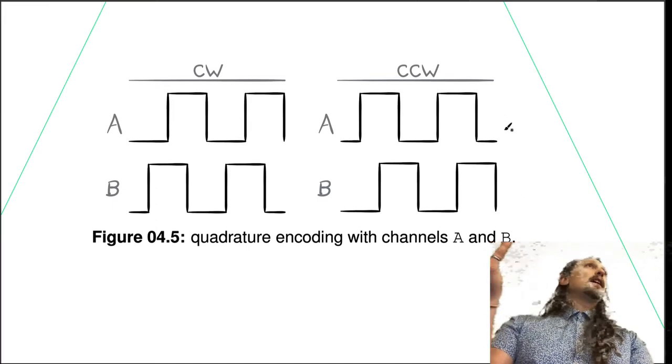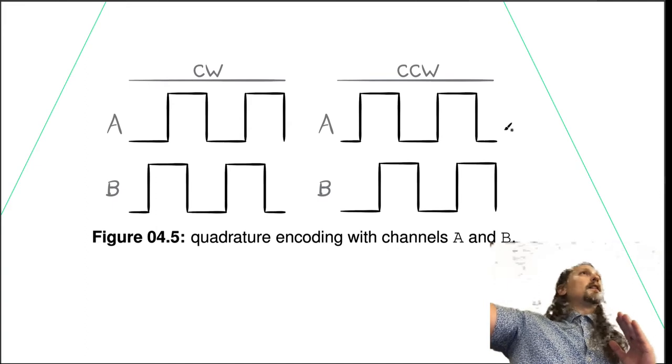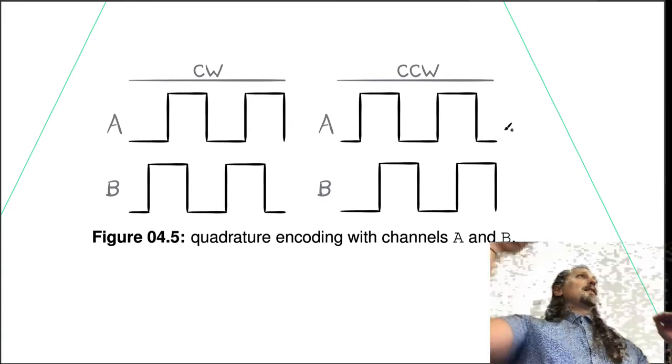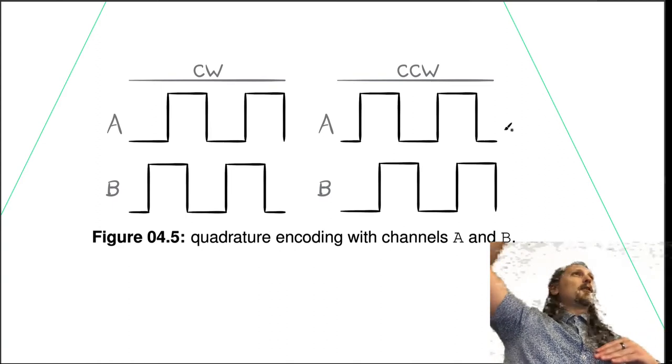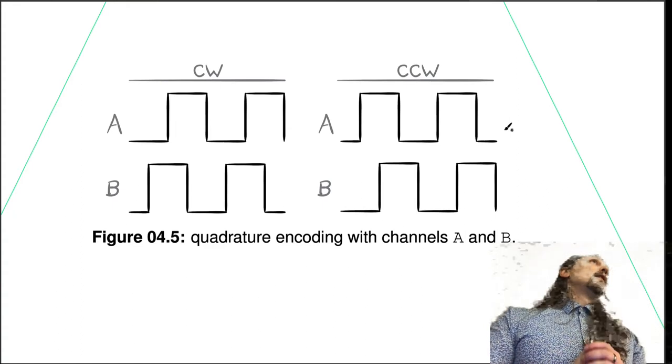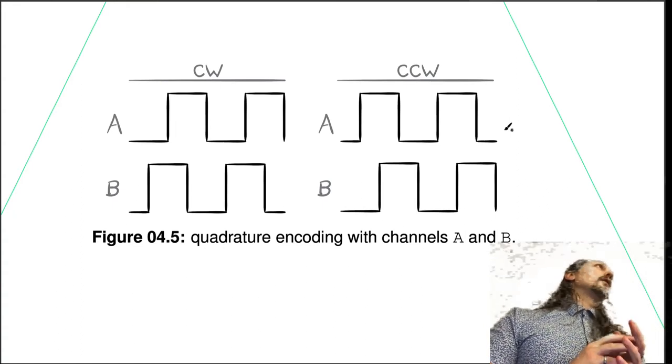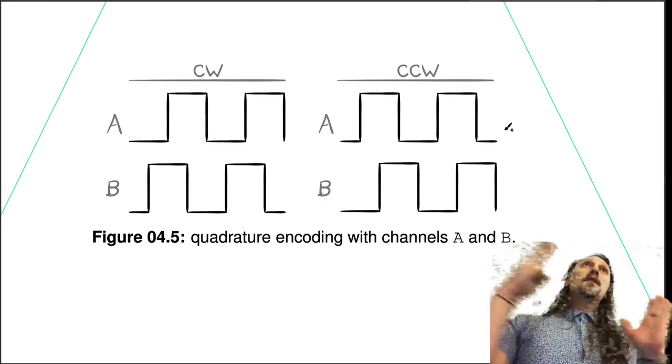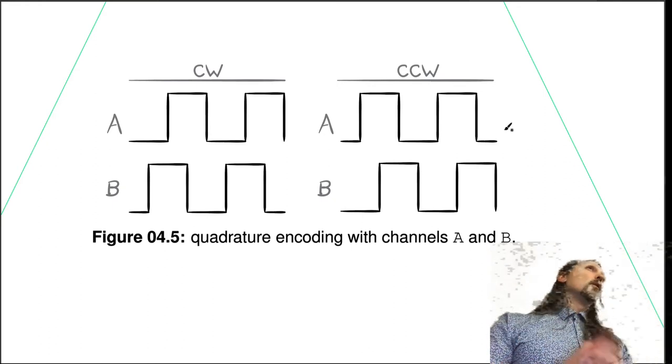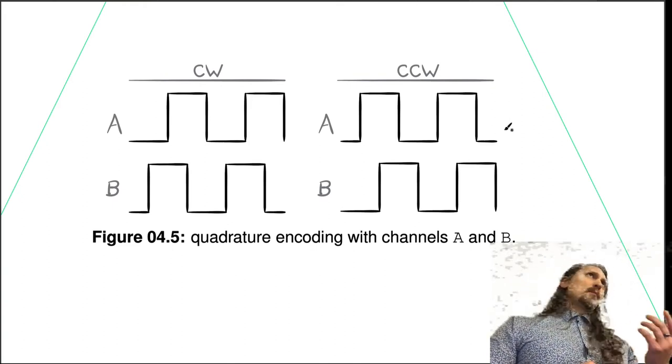You can also do linear quadrature encoding as well. Rotational ones have the advantage that you don't have to have a long tape unrolled—if you're moving a long linear distance, the encoder has to be a lot longer. But you can do quadrature encoding for linear position and for rotational position, and it's one of the more effective and inexpensive ways of determining position.